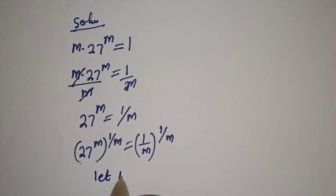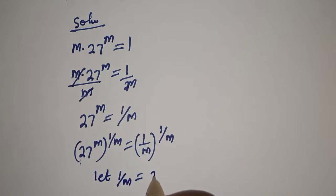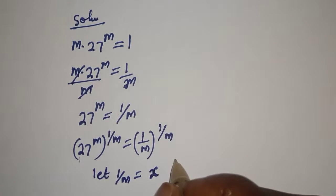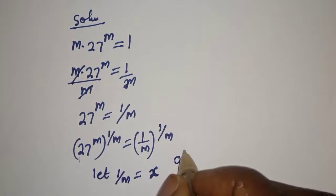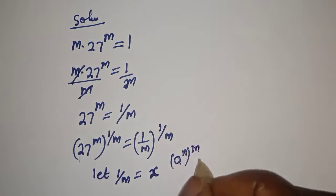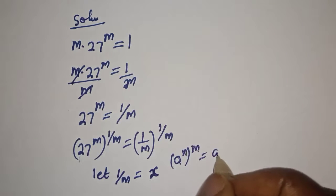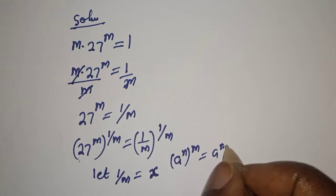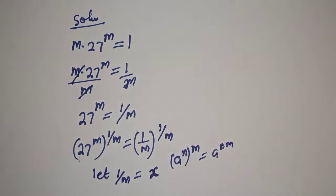Let s equal 1 over m. Using the rule that a raised to power n, to the power of m, equals a raised to power m times n.